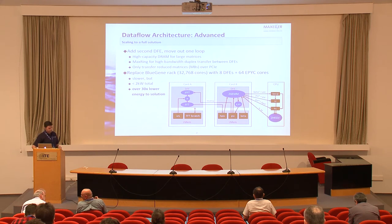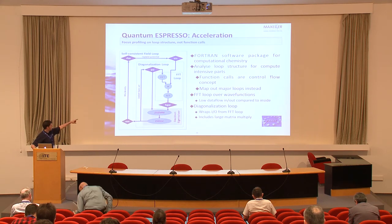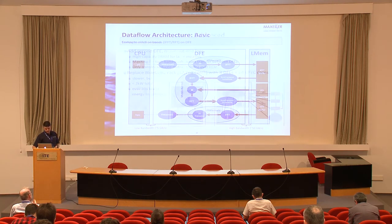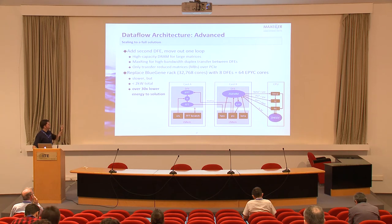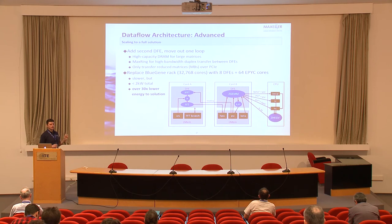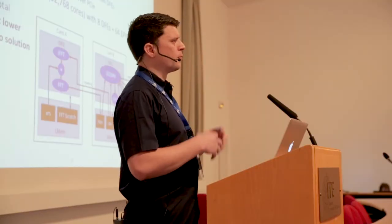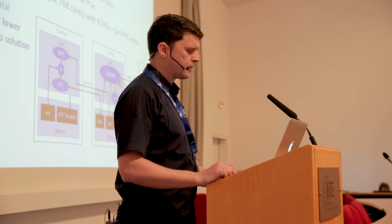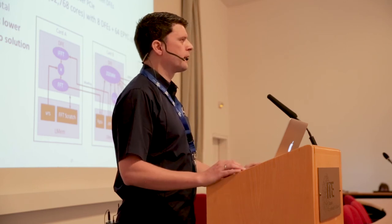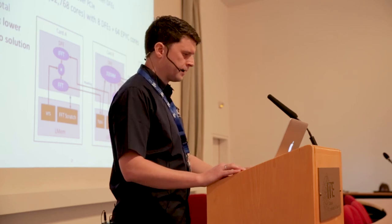We can go even further. There's a lot of information moving from the FFT to the ZGEMMs, so I can build an accelerator with two DFEs connected through MaxRing — the local interconnect I mentioned earlier. High-speed data transfers happen directly between the cards without going through the CPU at all, moving from FFT to ZGEMM and back. The CPU is only responsible for initiating inputs and collecting results. This is really about deconstructing the application and reasoning about the flow of information rather than just throwing an accelerator into the mix.